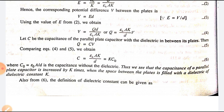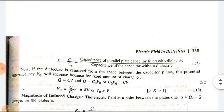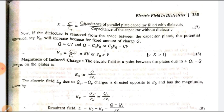Here C₀ = ε₀A/D is the capacitance without the dielectric. We see that the capacitance of a parallel plate capacitor is increased by K times when the space between the plates is filled with a dielectric of constant K. Also, from equation 6, the dielectric constant can be defined as K = C/C₀, that is, the capacitance with dielectric divided by the capacitance without dielectric.